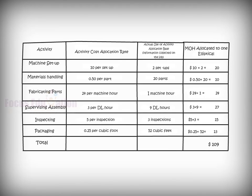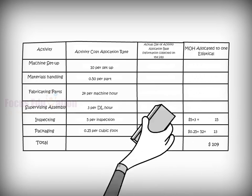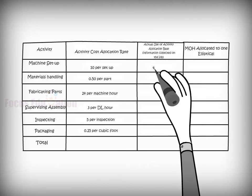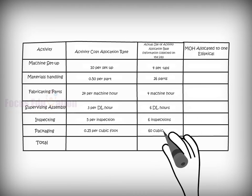Likewise, the company used the same activity cost allocation rates to distribute the manufacturing overhead to a job in which one treadmill was produced.